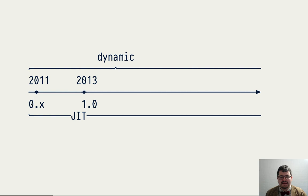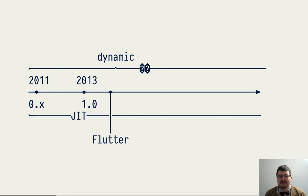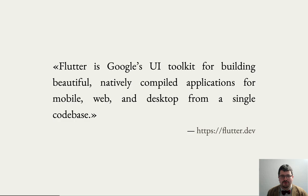It showed good performance. But something interesting happened at the end of 2014 and beginning of 2015 that caused us to look at shifting gears. A team at Google, not directly related to the Dart project, started exploring ways to improve the experience for mobile developers. They built something that eventually became known as Flutter — Google's UI toolkit for building natively compiled applications for mobile, web, and desktop from a single code base. This project ended up using Dart as its programming language.